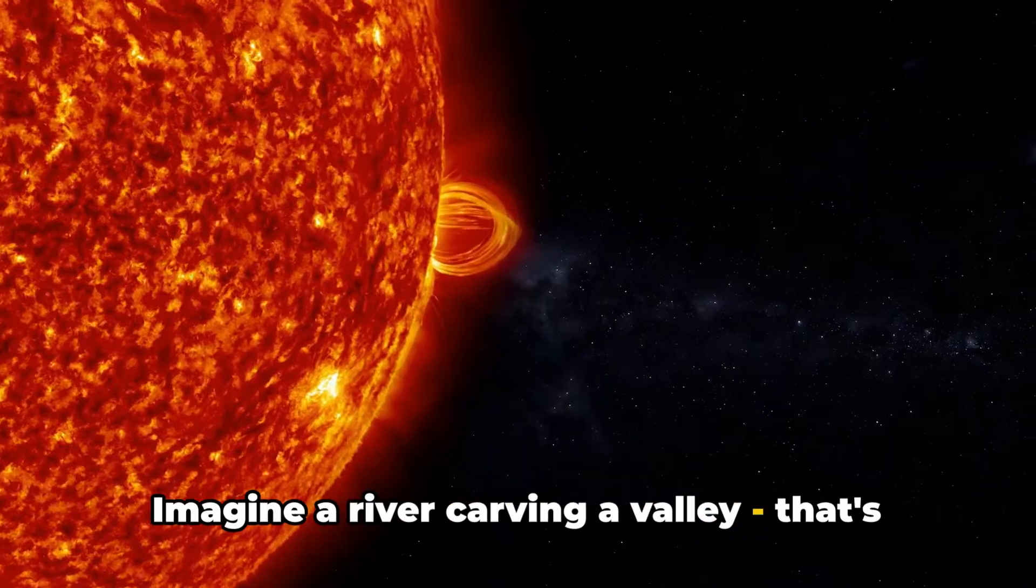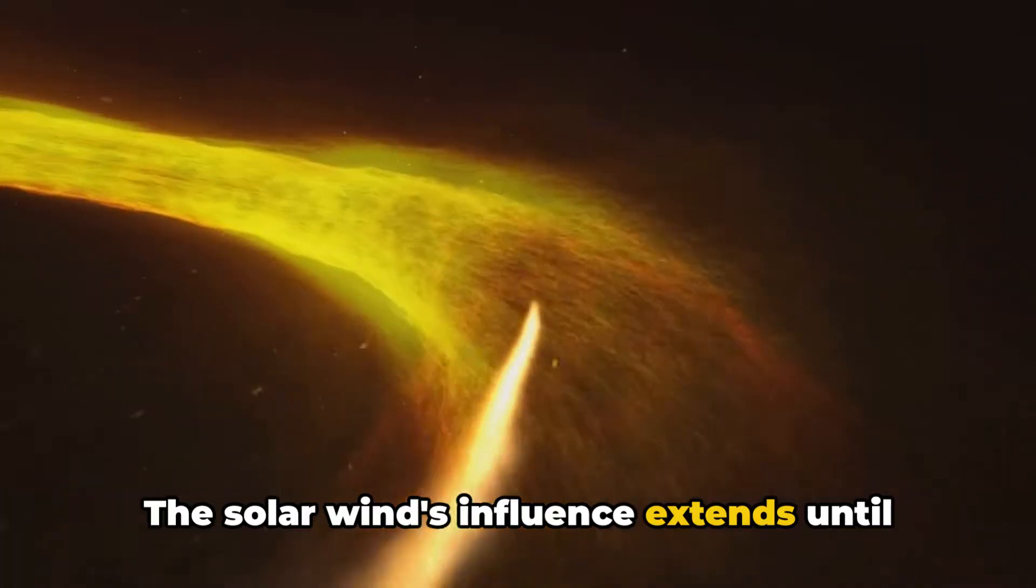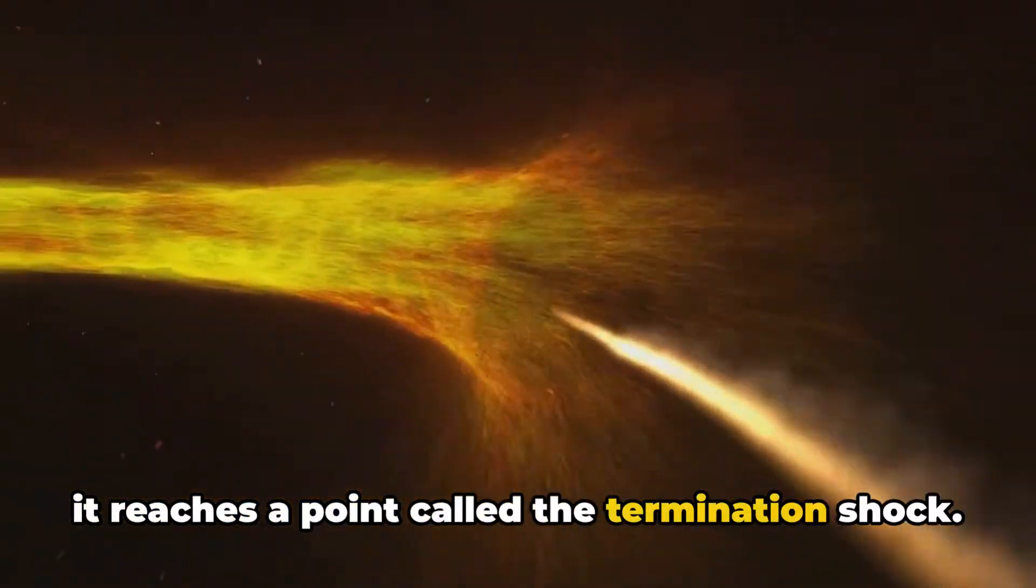Imagine a river carving a valley. That's the solar wind's relationship with the heliosphere. The solar wind's influence extends until it reaches a point called the termination shock.